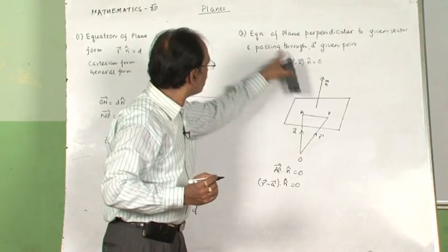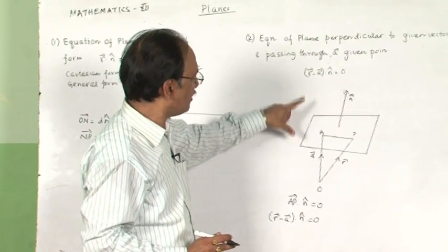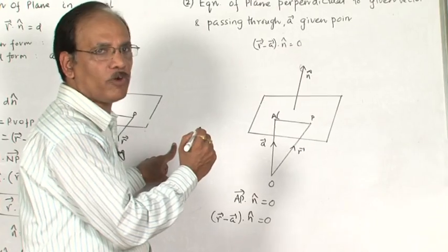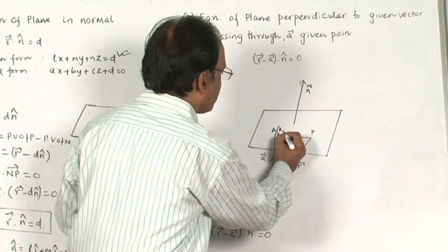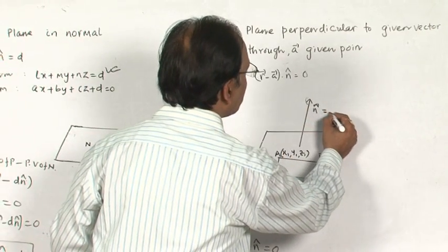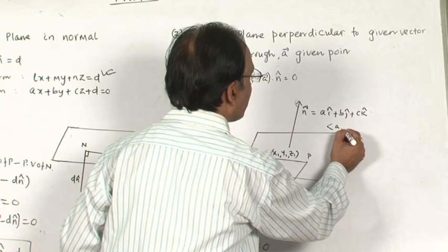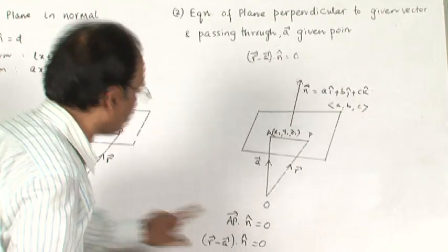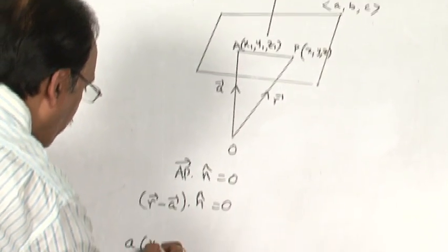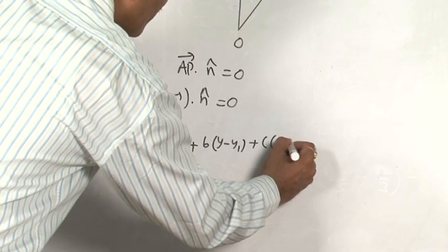Now for the equation of a plane perpendicular to a given vector passing through a point with coordinates (x₁, y₁, z₁), we take the normal direction ratios as a, b, c. Substituting the coordinates of P as (x, y, z), we get the Cartesian form: a(x − x₁) + b(y − y₁) + c(z − z₁) = 0.